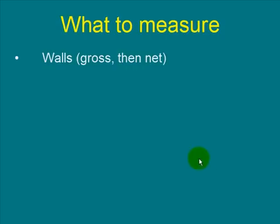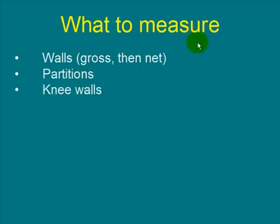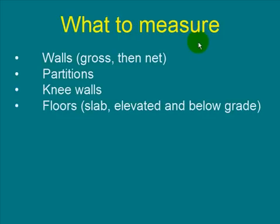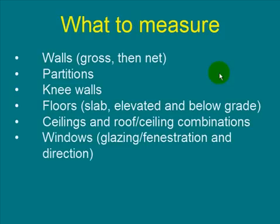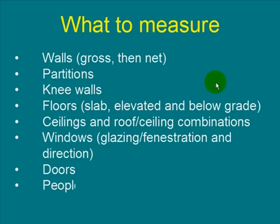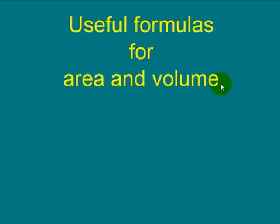We're going to tell you what to measure: walls, gross then net. Partitions, knee walls, floors, slab, elevated, below-grade floors, ceilings and roof combinations, windows, glazing, fenestration, whatever you want to call it, and direction become important. Doors, people and appliances — all those things we're going to talk about.